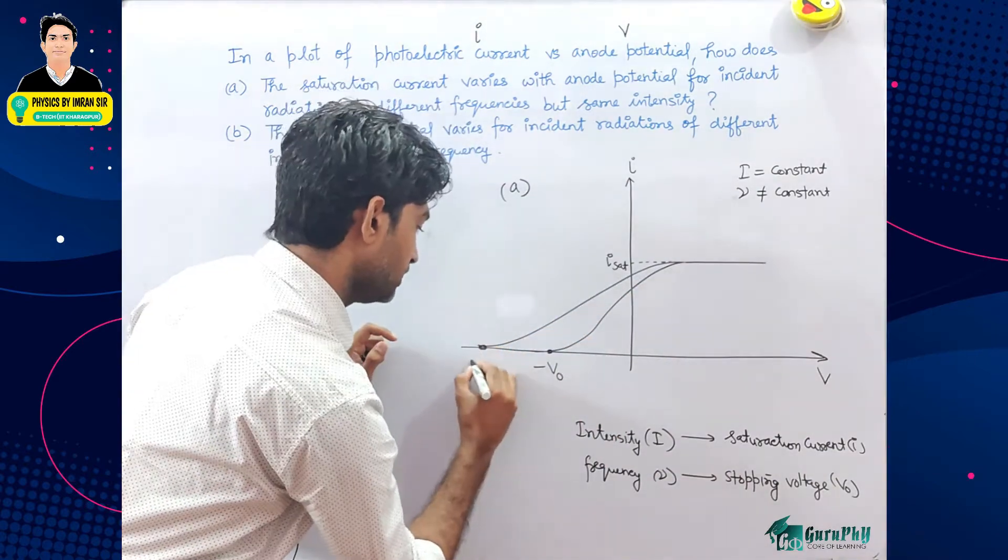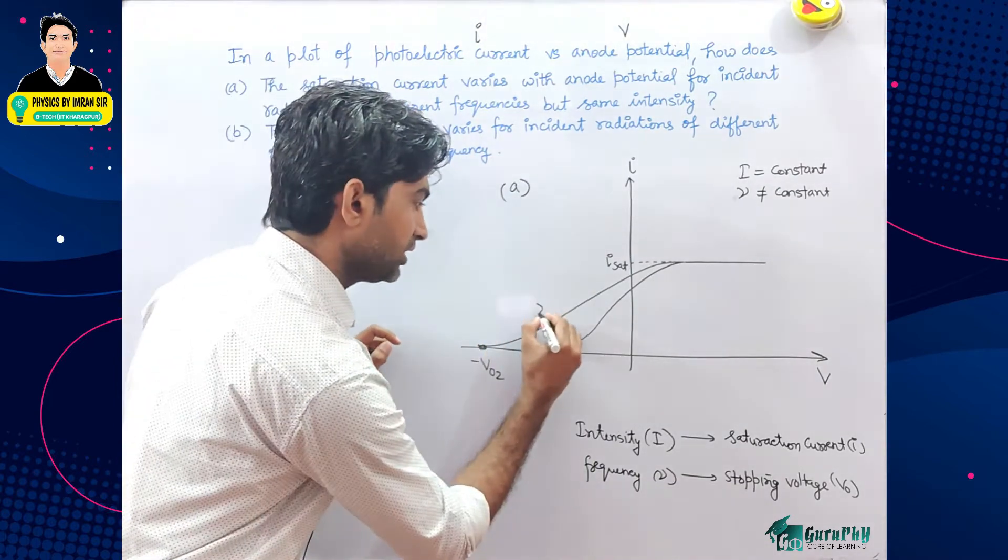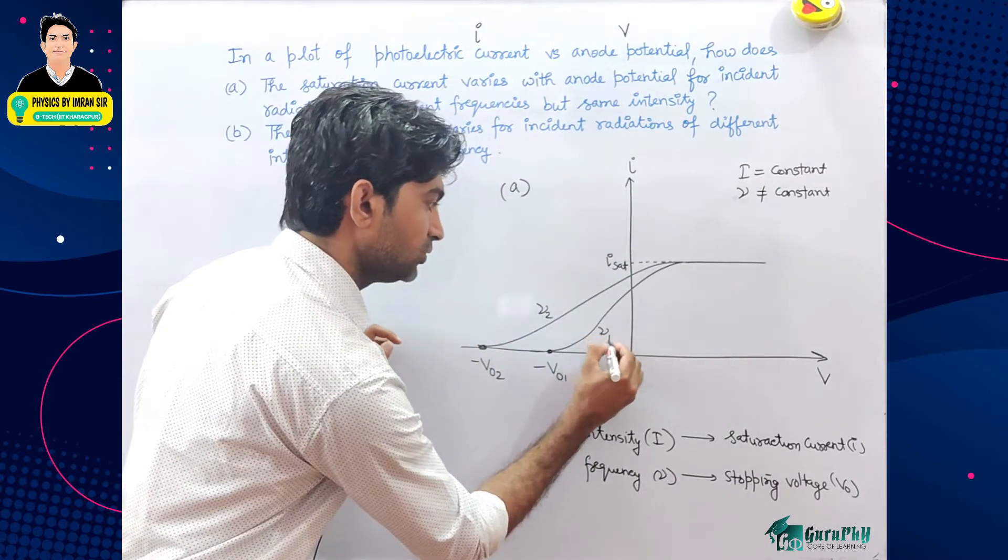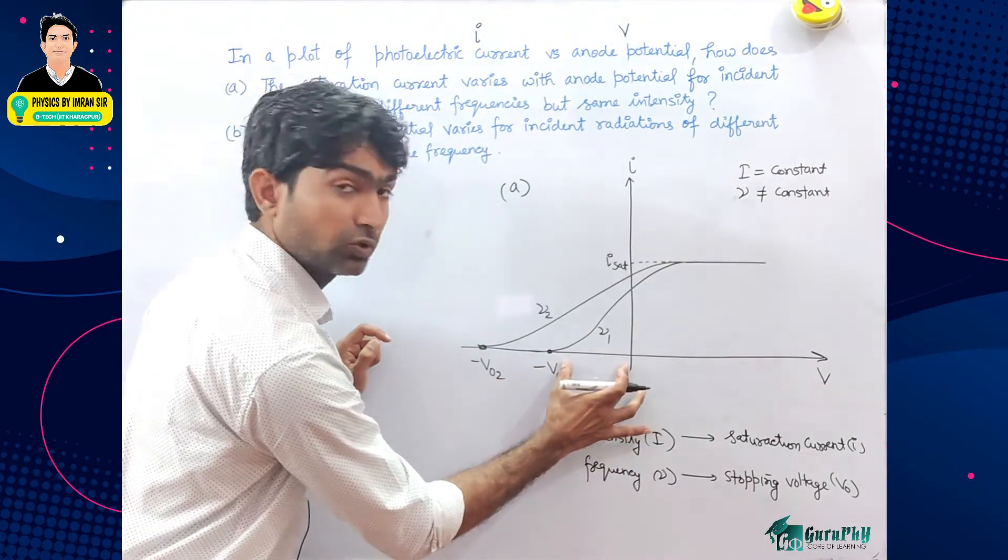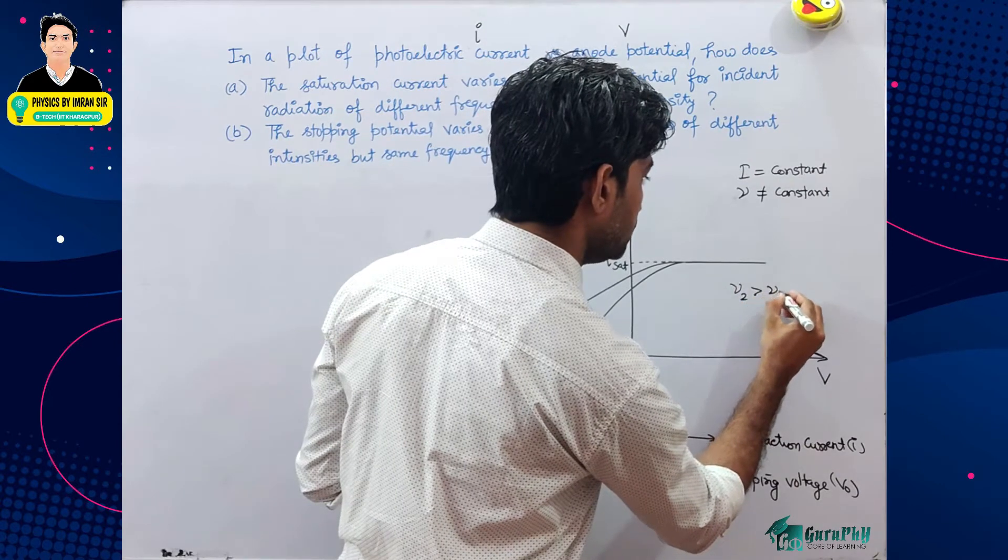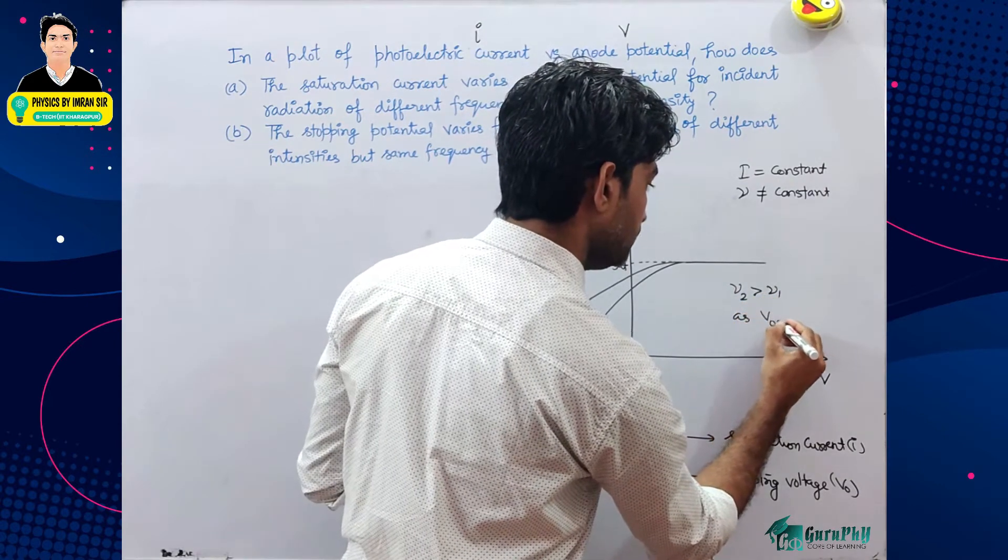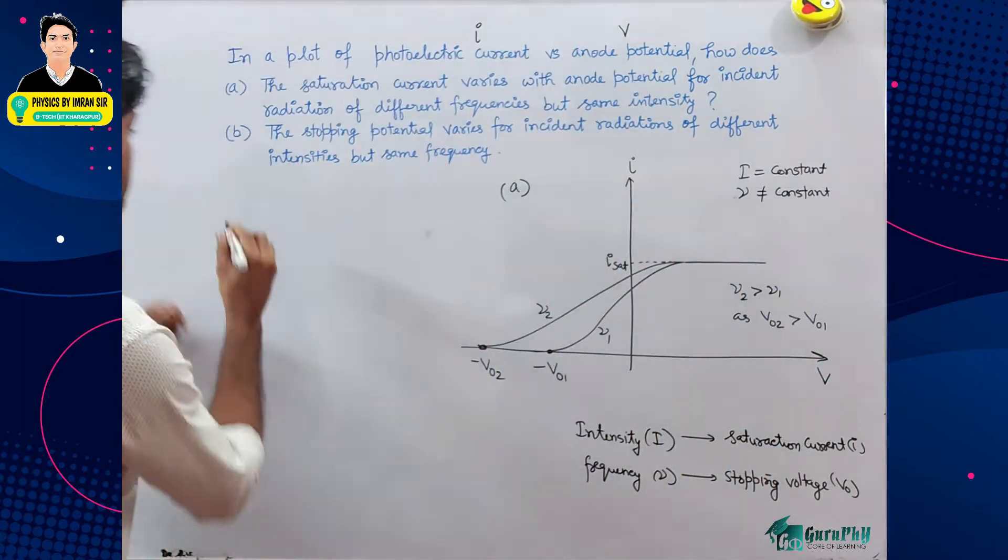Yeh line yahan se hai, yeh rahega. Yeh stopping voltage suppose. In part two, yeh frequency nu 1, yeh frequency nu 2. Jo zyada hai to voltage bhi zyada. Yeh voltage stopping voltage kam hai aur yeh zyada hai. So nu 2 will be greater than nu 1 as V naught 2 is greater than V naught.